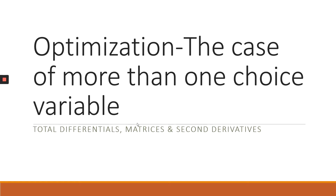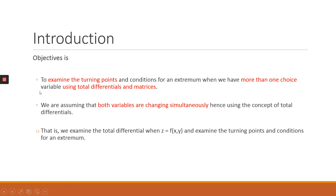In this video, we are going to look at how we can solve optimization problems with more than one choice variable. We are going to apply total differentials, matrices, and second derivatives in solving these problems. We will examine the turning points, solve for these extremants, and then use total differentials and matrices to decide whether the turning point is a maximum or a minimum. One major assumption is that both variables are going to be changing simultaneously.